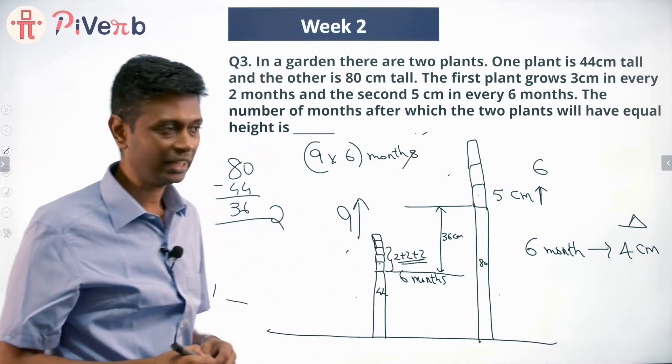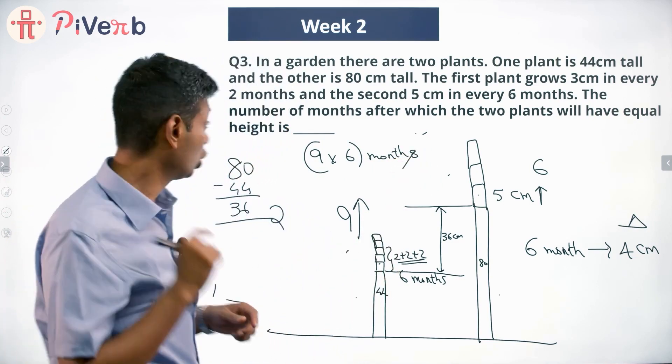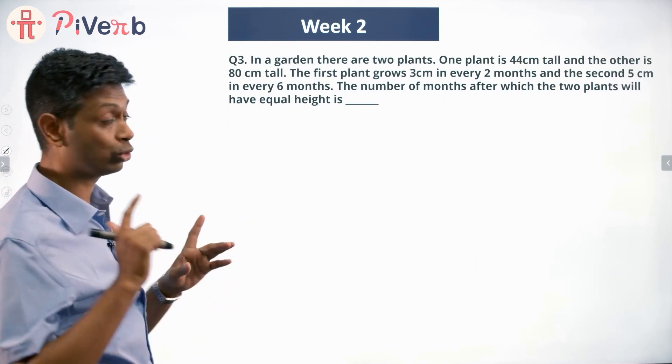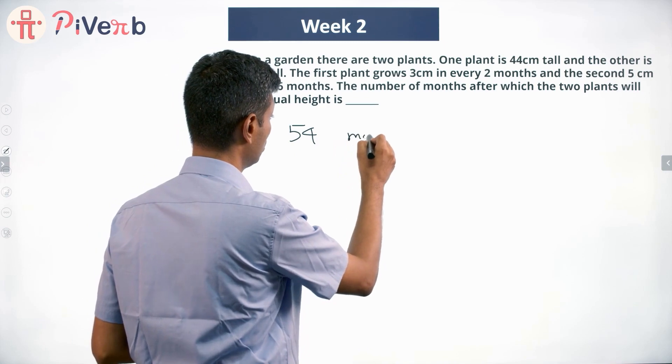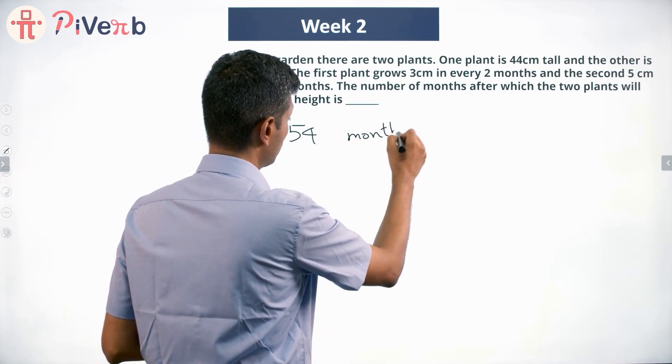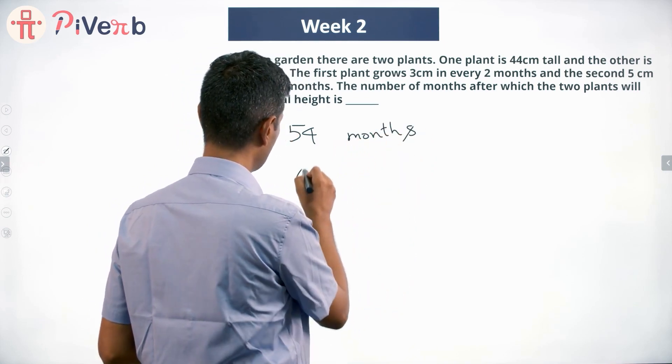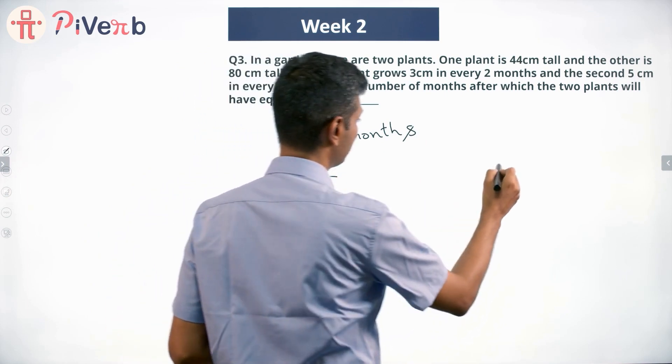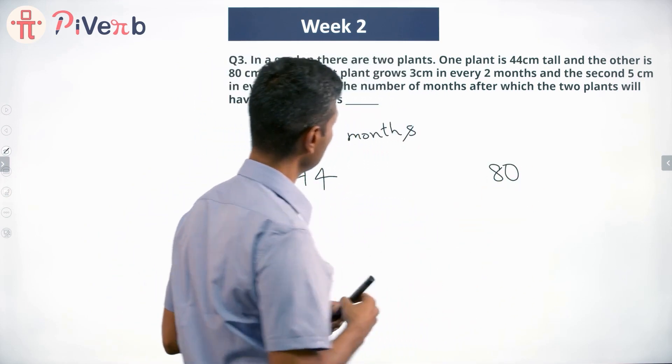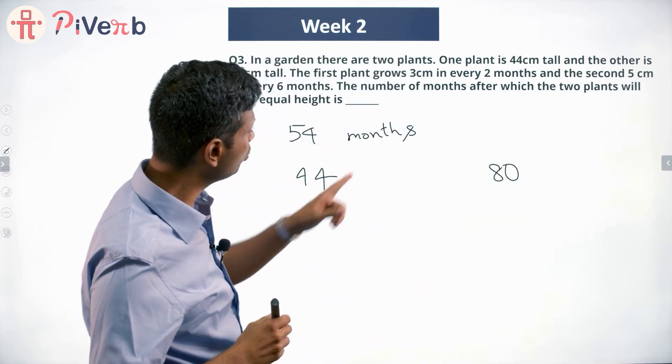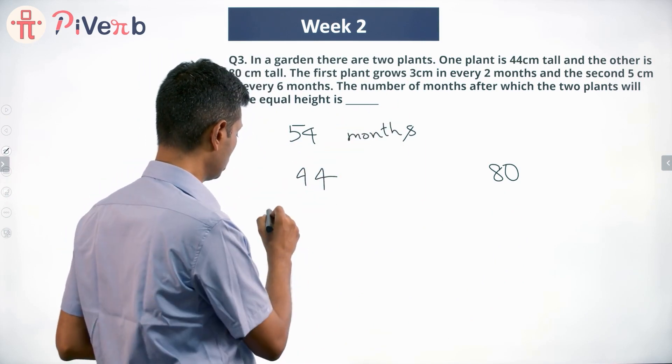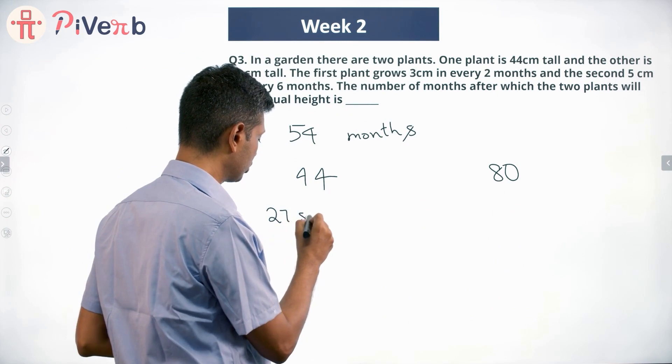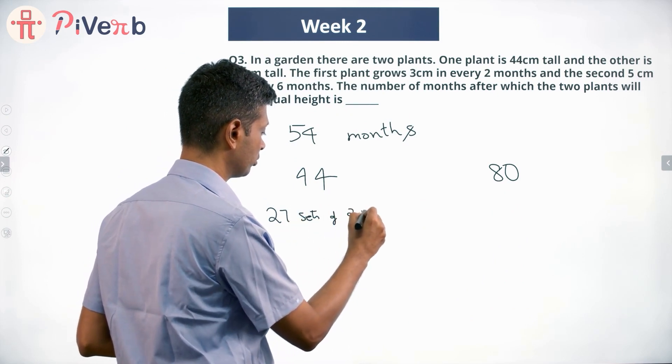I'm going to do a very quick recap and introduce you to one more idea. 54 months is our answer. Let me cross check this. One plant starts at 44, another plant starts at 80. Every 2 months this grows 3 centimeters. So 54 months is 27 sets of 2 months.